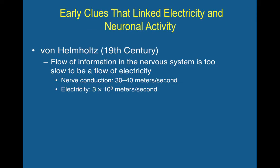There were a couple of early clues that linked electricity and neural activity. Early scientists and lay people wouldn't really connect electricity with communication within their own body. Von Helmholtz, in the 19th century, was one of the first scientists to investigate the flow of information in the nervous system. He found that this flow of information was too slow to be the flow of electricity — nerve conduction is about 30 to 40 meters per second, whereas electricity travels at 3×10⁸ meters per second. So electricity is involved, but how exactly?